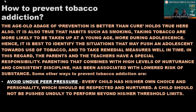Now that we know about the harms caused by tobacco, let's talk about prevention. The age-old adage of prevention is better than cure holds true here. Habits such as smoking and taking tobacco are more likely to be taken up at a young age or during adolescence. Hence, it is best to identify the situations that may push an adolescent towards tobacco use and to take remedial measures well in time. In this regard, parents and teachers have a special responsibility. Parenting that combines high levels of nurturing with consistent discipline has been associated with lowered risk of substance use. To prevent tobacco addiction, one approach is to avoid undue peer pressure — every child has their own choice and personality, which should be respected, and a child should not be pushed beyond their threshold limits.